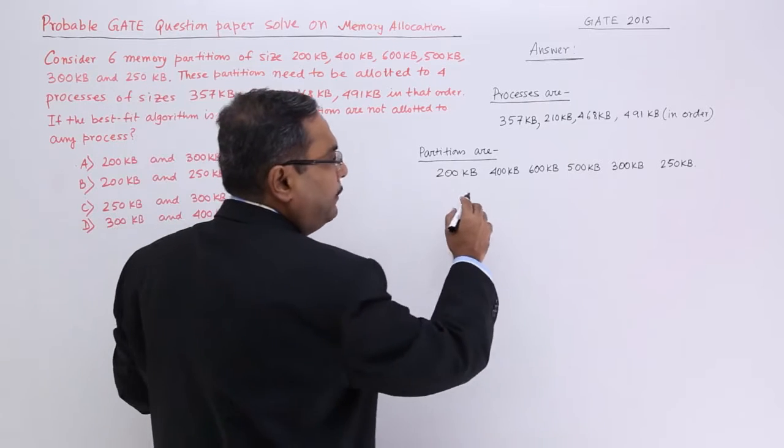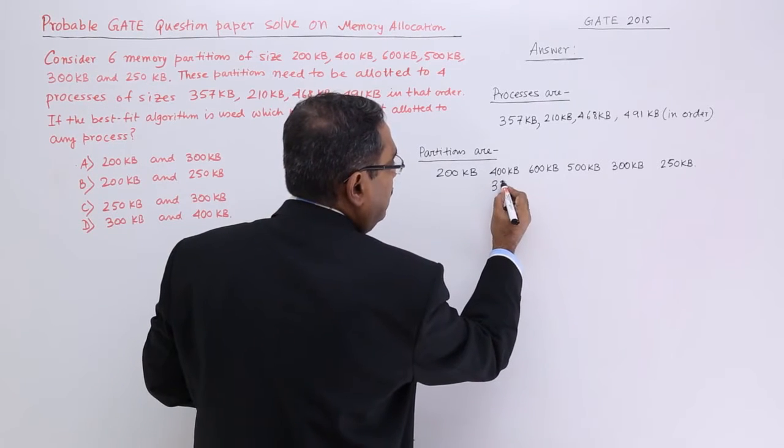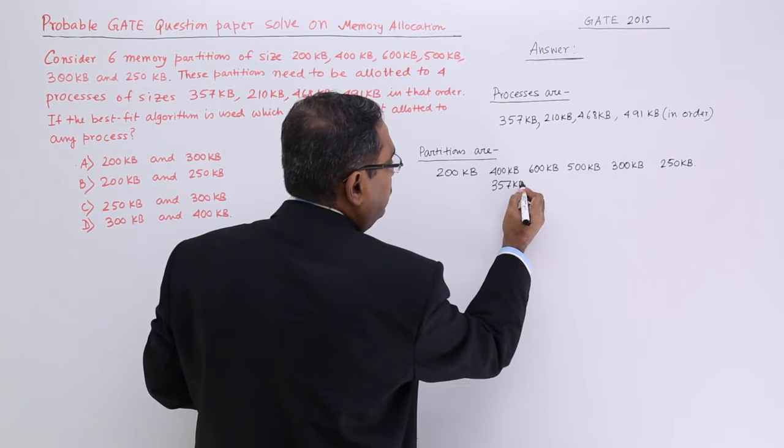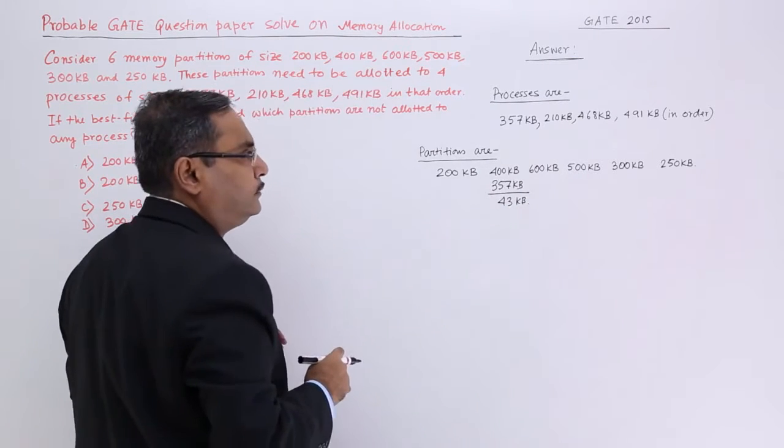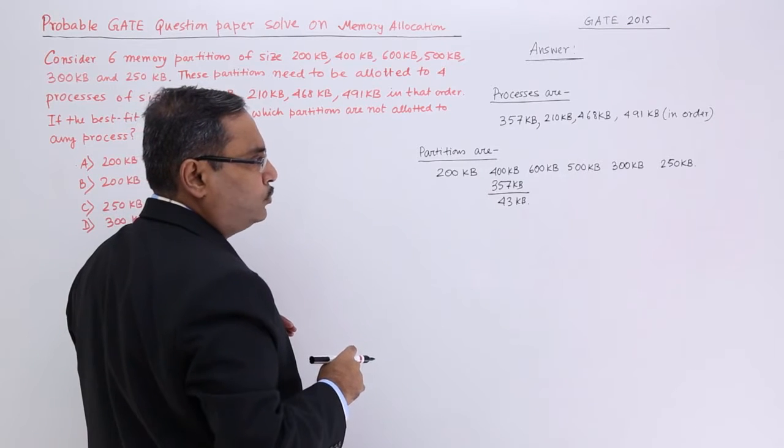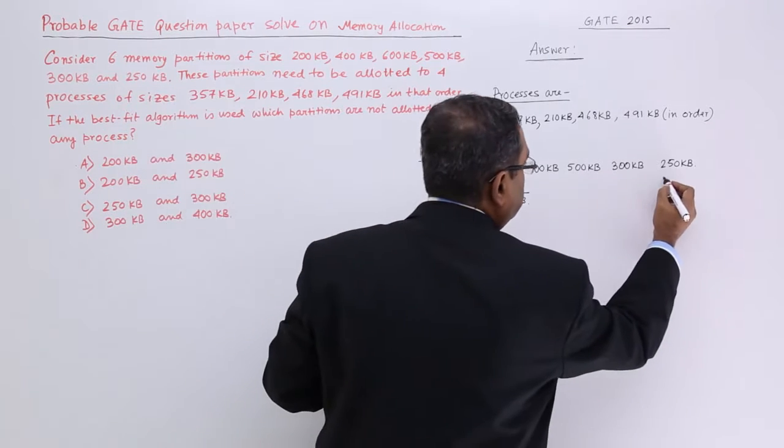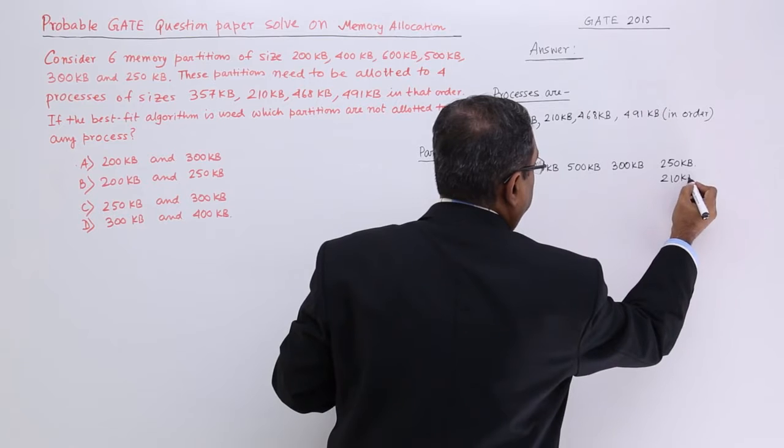357 KB will be coming to this one. I shall be remaining with 43 KB. Then 210, 210 will be coming to this best fit algorithm.